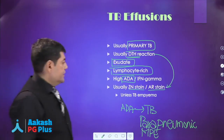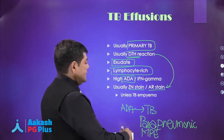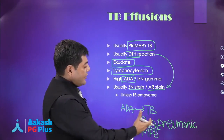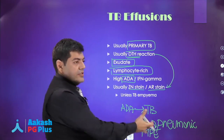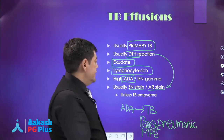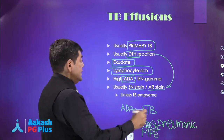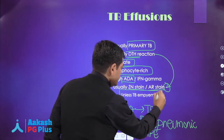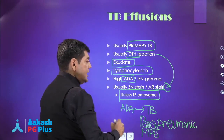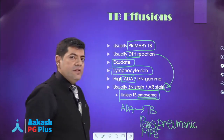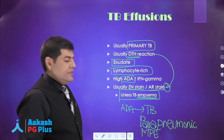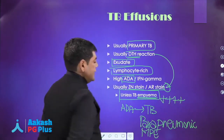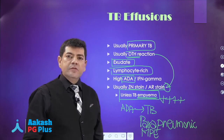Those are the causes of raised ADA — you can get a question on that, such as 'all the following are causes of raised ADA in pleural fluid except,' or a PGI-style question asking which effusions have elevated ADA. The stain is negative; you do not see organisms in pleural fluid due to TB unless you have tubercular empyema, when the pleural pus is teeming with tubercle bacilli.